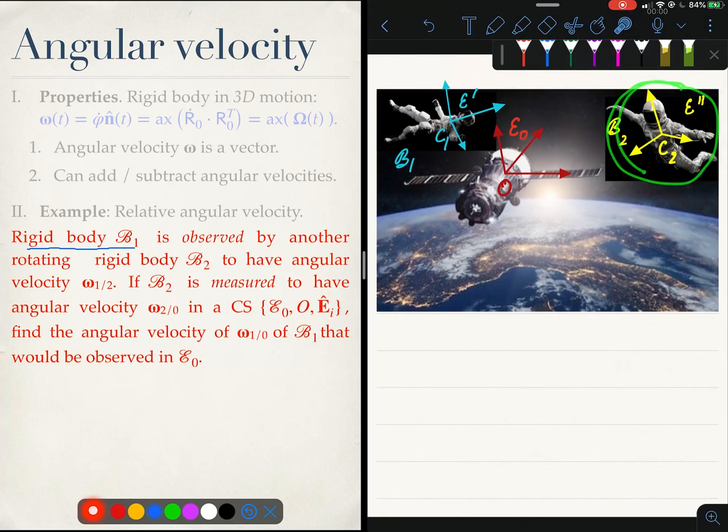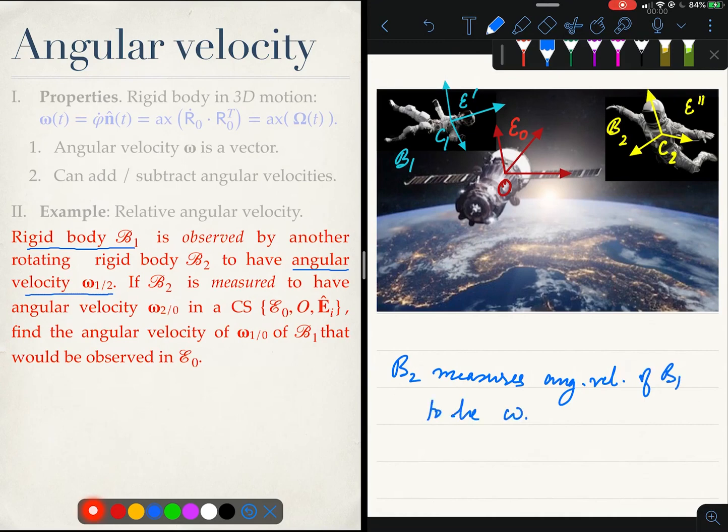So this guy is observing this other chap and he is measuring an angular velocity omega 1 2. B2 measures angular velocity of B1 to be omega 1/2.